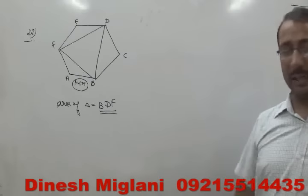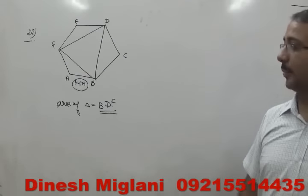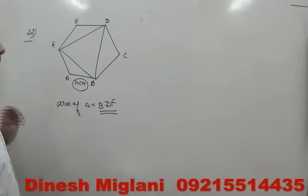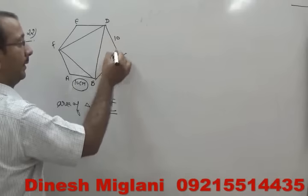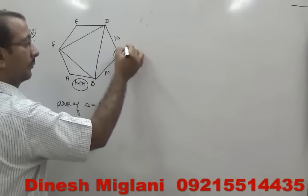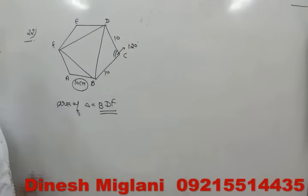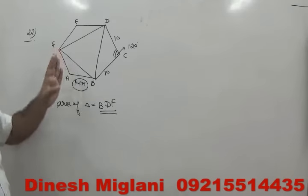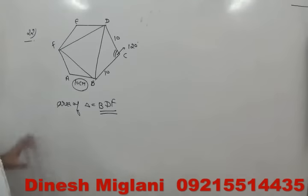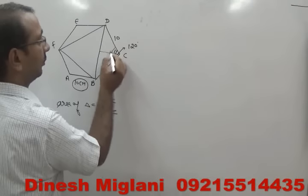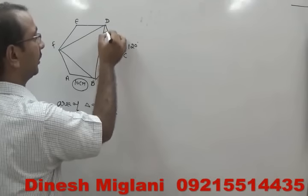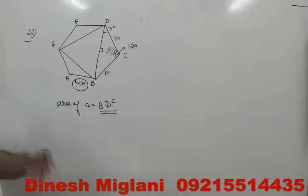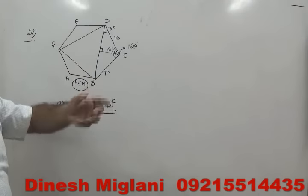Each curved portion of the rope wraps around one log. Since the centers form an equilateral triangle, each interior angle is 60°, making the exterior wrap angle 120° at each log. The arc length at each log is (120/360)(2π)(5) = 10π/3. For three logs, total curved length = 3 × (10π/3) = 10π. Therefore the minimum rope length is 60 + 10π.